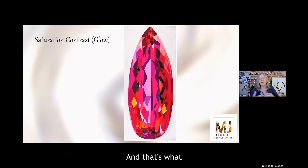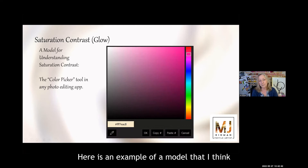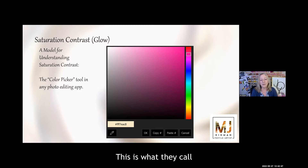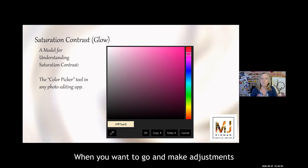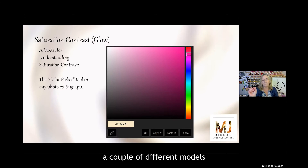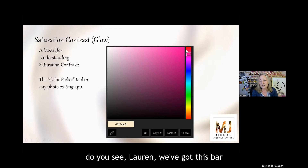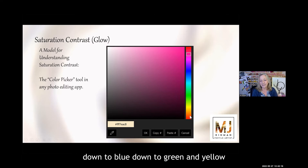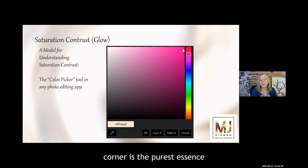Here is a model that might help explain it better — this is the color picker tool in any photo editing app. When you want to make adjustments to images in an app like Adobe Photoshop, or a free one called Photoscape, you have options for picking different models. We've got a bar where all the rainbow is — you can slide that little toggle up and down, and it'll go from fuchsia down to blue, down to green, down to yellow, and then back to red. Over to the left is a perfect example of saturation and glow. Everything in the upper right-hand corner is the purest essence of that hue — the brightest fuchsia. Going along the top, it's still highly saturated; you're just adding white to it until you get to white, but it's still highly saturated.